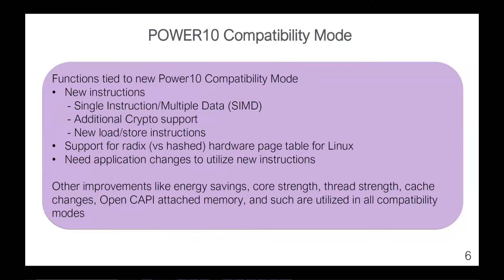When running in compatibility mode, things like energy saving, core strength, caches — all the new Power 10 hardware features — are available in all compatibility modes. It's really just the specific instruction set features at the top that are unlocked with Power 10 compatibility mode. New versions of C and C++ compilers are being rolled out to take advantage of these new instructions and optimize where they make sense.